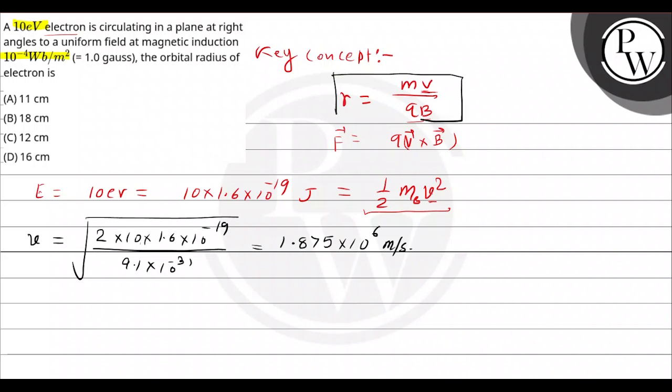Now we have to put this value into the equation to find the radius. So radius is equal to mass of electron 9.1 into 10 to the power minus 31 into speed 1.875 into 10 to the power 6, divided by charge 1.6 into 10 to the power minus 19 into B 10 to the power minus 4. This is equal to 9.1 into 10 to the power minus 31 divided by 1.6 into 10 to the power minus 23.